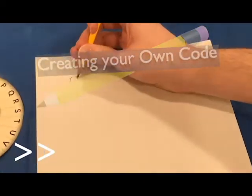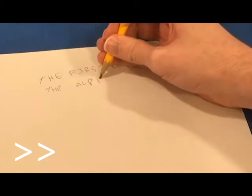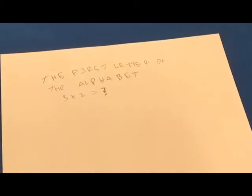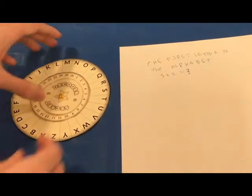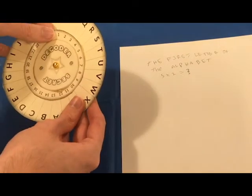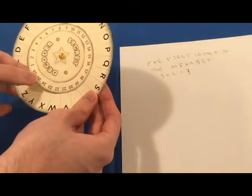To make your own code, you'll first need a hint. I wrote, The first letter of the alphabet, and 5 times 2 equals what? As you can see, that means A and 10. So I'll line the 10 up with the A.